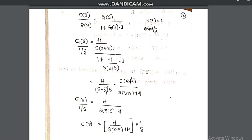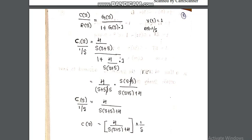Substituting G(s) = 4/[s(s+5)], we get C(s)/R(s) = [4/s(s+5)] / [1 + 4/s(s+5)]. Taking LCM and simplifying, C(s) / (1/s) = 4 / [s(s+5) + 4]. Cross-multiplying, C(s) = 4 / [s(s+5+4)] · (1/s).